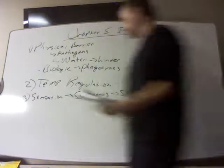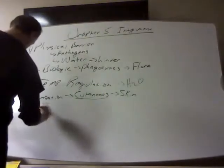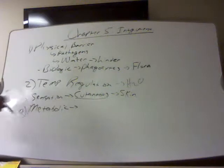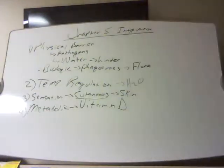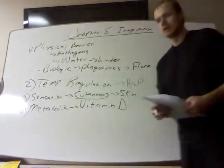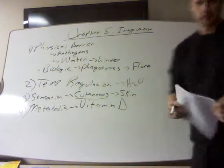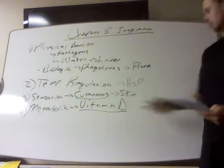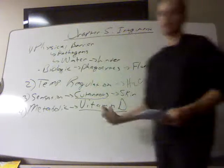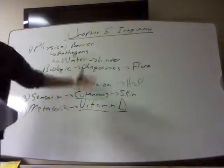If you flip to the next page on the PowerPoint, the skin has metabolic functions. The main one is vitamin D production. The process doesn't take place entirely in the skin — it only begins there. We have a pro-hormone, a precursor to vitamin D, stored in the skin. When sunlight hits it, a chemical reaction begins; the energy from the sun alters the chemical structure of that pro-hormone, which is then circulated to the liver and kidneys.